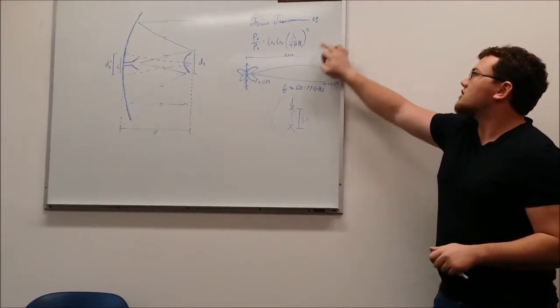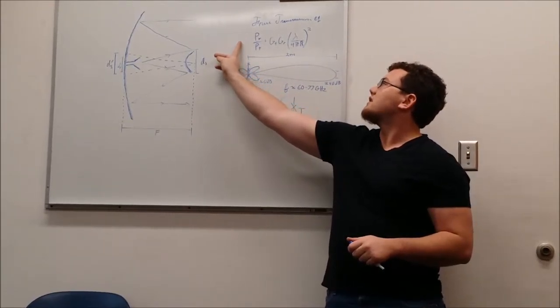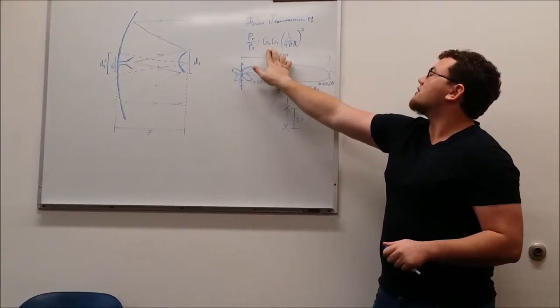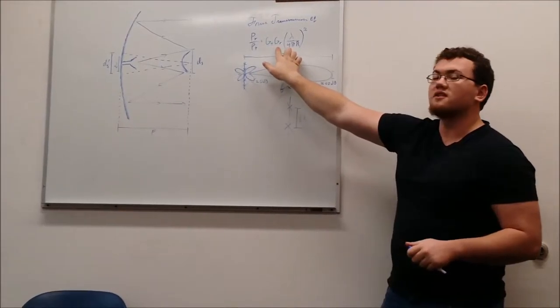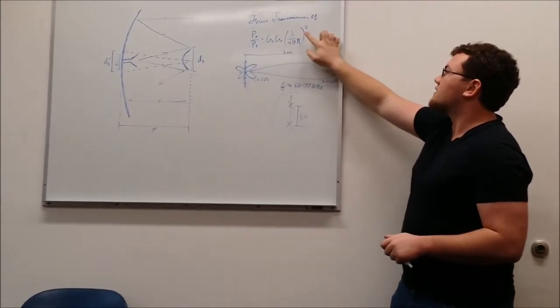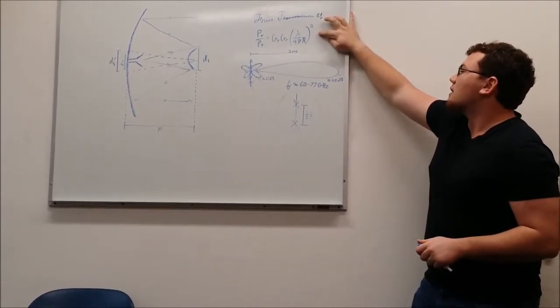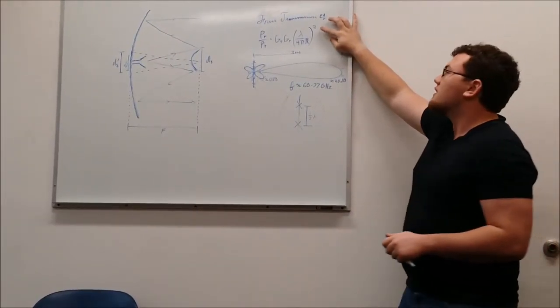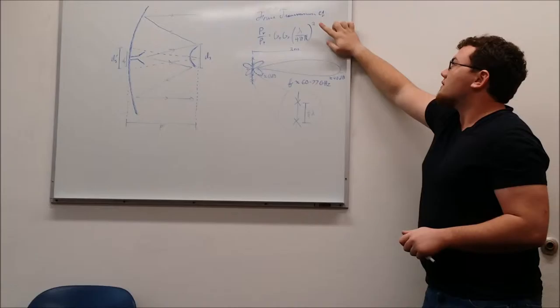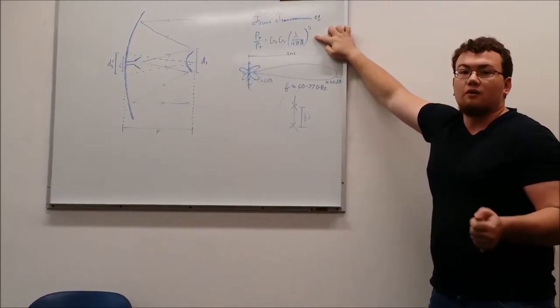Factoring that into the equation where this is the power received at the device, this is your power transmitted, you've got the gain respectively of both your transmitting and receive antennas, and then you have this factor here. As you can see, that lambda really factors into there. And with a tiny lambda being squared and at some kind of range, this factor would really end up diminishing any power that we got to the device.